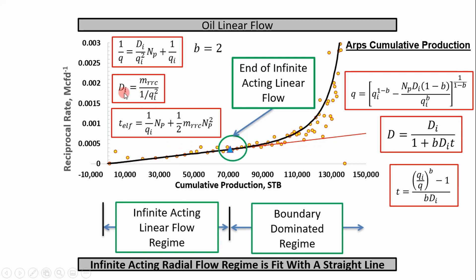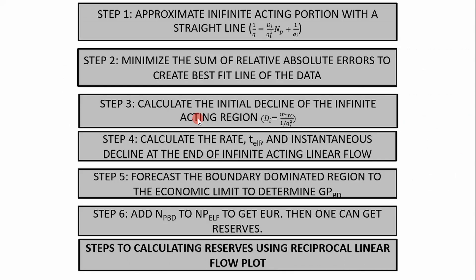DI is simply going to be equal to this slope right here. I'm defining the slope as MRRC. You can set that equal to DI over QI squared and then solve for DI to get this equation. The time to the end of linear flow is achieved using these two equations from ARPS, where you substitute B equal to two. Essentially it's the same steps we used in the natural gas series. Pause the video and read through this — these are the steps we're going to go through. I'll see you in Excel in just a second.